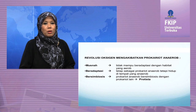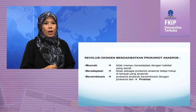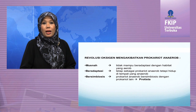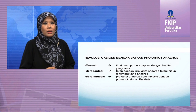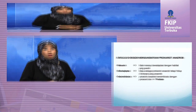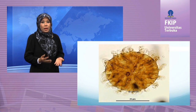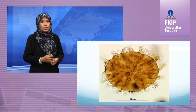Ketiga, bersimbiosis dengan prokaryot lain dan membentuk kehidupan baru sebagai sel eukaryot yang dikenal sebagai protista. Protista mulai muncul di bumi sekitar 2 miliar tahun yang lalu, yang dibuktikan oleh penemuan fosil tertua pada lapisan prakambrian yang disebut akritah.